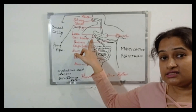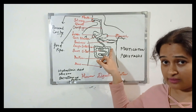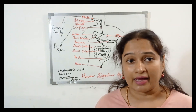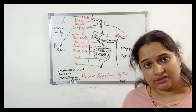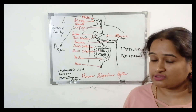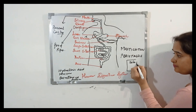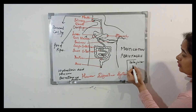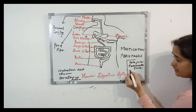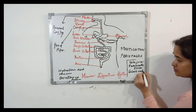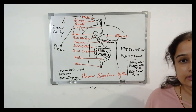The liver is the largest gland of the body, roughly triangular in shape, and the pancreas is present just below the stomach. The liver produces bile juice, which is stored temporarily in the gallbladder until it is poured into the small intestine. The pancreas produces pancreatic juice. So in the small intestine, you get three types of secretions: bile juice from the liver, pancreatic juice from the pancreas, and intestinal juice from the walls of the intestine.